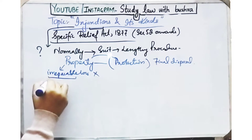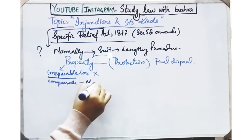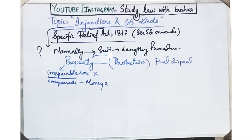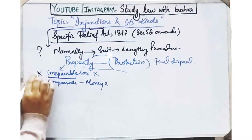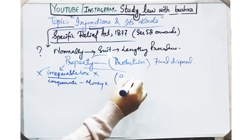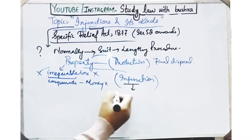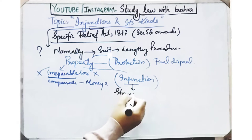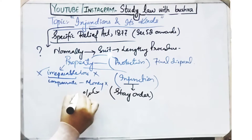Now what is this irreparable loss? It is any loss which cannot be compensated in the form of money — we cannot give monetary compensation for it. So to protect parties from this kind of loss and to keep the property intact, the court issues an order so that the status of the property can be maintained. This order is called an injunction.